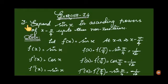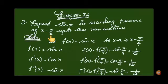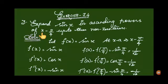Exercise 7.4, third sum. Expand sin x in ascending powers of x minus pi by 4, up to 3 non-zero terms, up to the end of the Taylor series. McLaurin series is at x equal to 0, while Taylor series is at x equal to a, expanding in powers of x minus a.